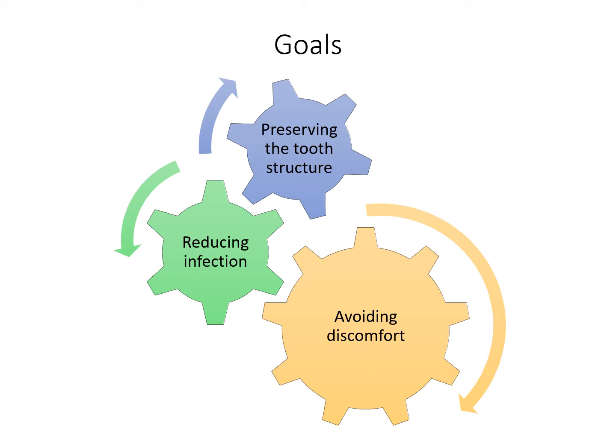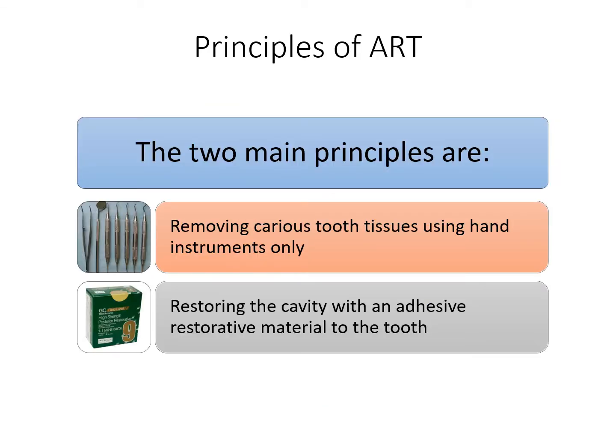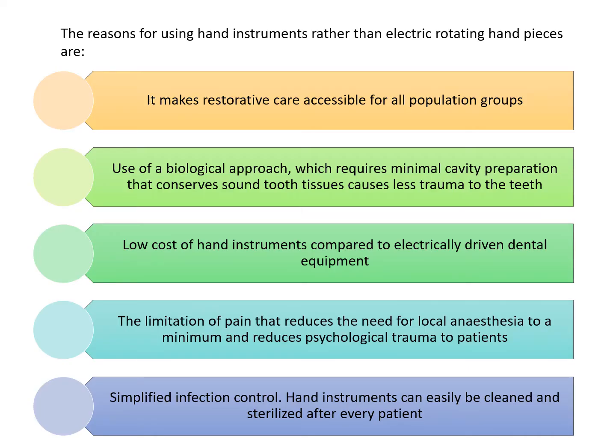The goals of ART are to preserve tooth structure as much as possible, reduce infection of the pulp, and avoid discomfort to the child patient. The two governing principles are: removing caries with hand instruments and restoring the cavity with an adhesive restorative material. We use high viscosity, high strength GIC for restoration, as it provides chemical adhesion to tooth structure and a fluoride reservoir to prevent future caries.